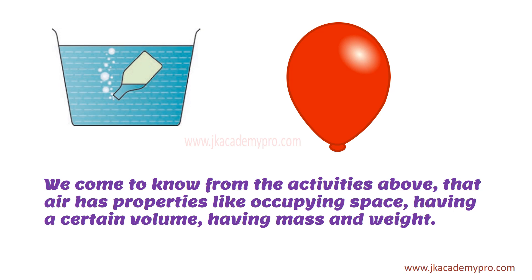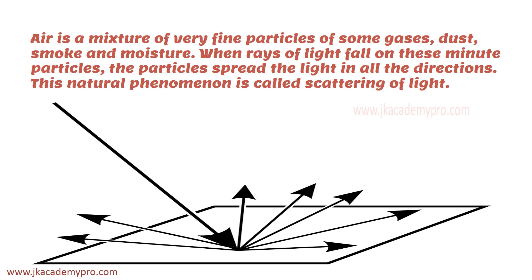From these activities we learn that air has properties like occupying space — that is why air in the empty bottle came out as bubbles and water entered. Air also has volume. Earlier we saw that air has mass and weight. Our earth is surrounded by an envelope of air — a mixture of fine particles of gases, dust, smoke, and moisture. When sun rays fall on these minute particles, they spread light in all directions. This is called the scattering of light.